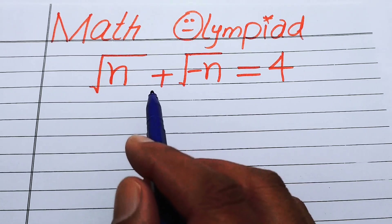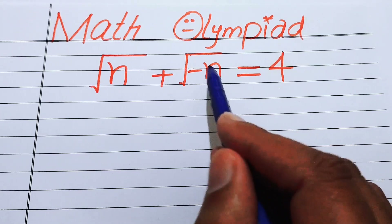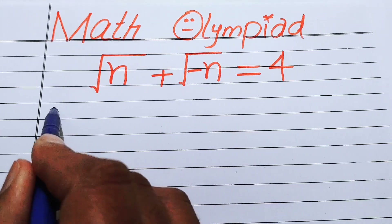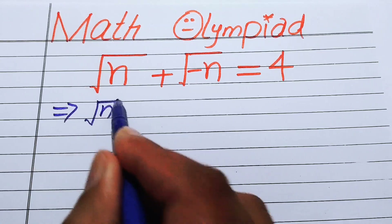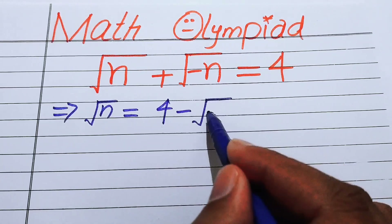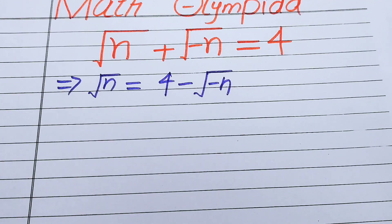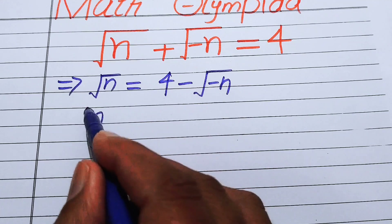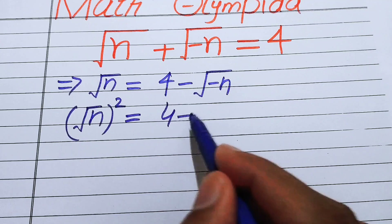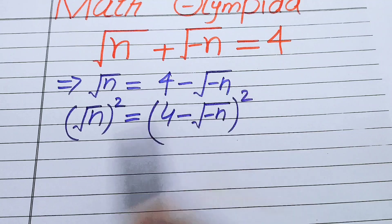The very first thing we are going to do is move the square root of minus n to the right hand side, and we obtain: square root of n equals 4 minus square root of minus n. After this step we take the square on both sides, and we obtain: (√n)² equals (4 minus √(−n))².